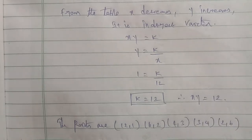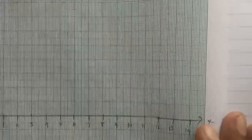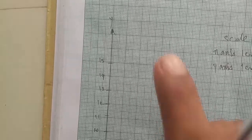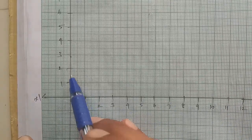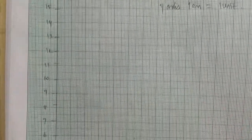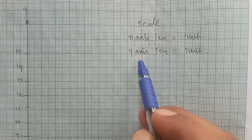Now I'll plot these points on the graph. Draw the x-axis and y-axis. The scale is: x-axis 1 centimeter equals 1 unit, y-axis 1 centimeter equals 1 unit.